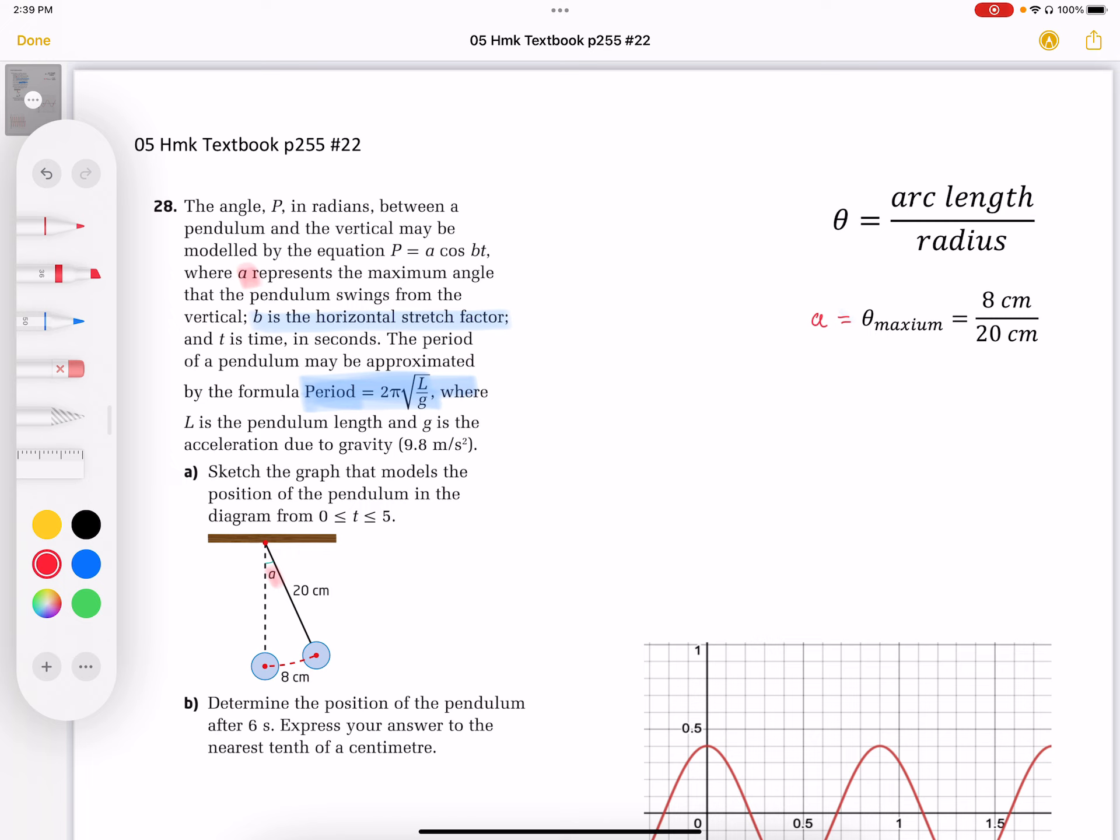Now, what the P represents is an angle, so I'm going to actually change that into theta, because that's a little bit confusing if we start mixing up with our period.